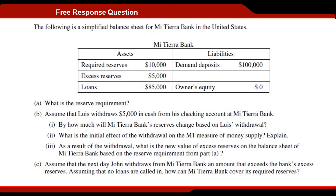So the following is a simplified balance sheet from Meteora Bank in the U.S. We've got assets on the left side and liabilities on the right side — this is just a classic balance sheet. And hopefully you remember the basic accounting equation, which tells us that in any balance sheet, assets must equal liabilities. In required reserves we've got ten thousand, in excess reserves we've got five thousand, and then loans we've got eighty-five thousand. What you'd want to do is copy this down on your own piece of paper — I'll go ahead and add a total row.